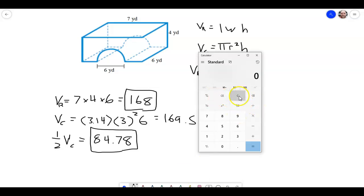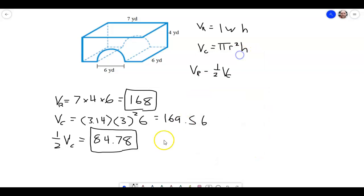So we should get, let's clear this out, 168 minus 84.78. We get 83.22. So that's going to be equal to 83.22.